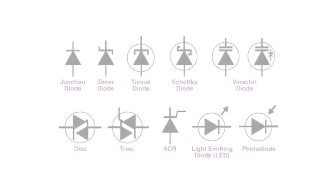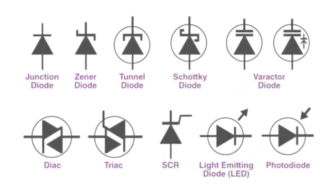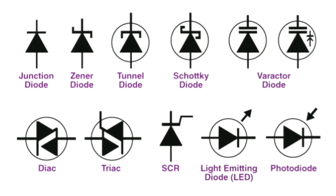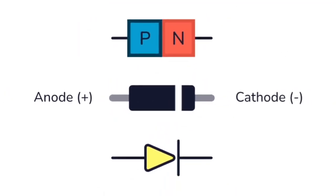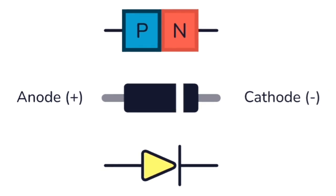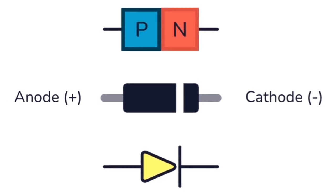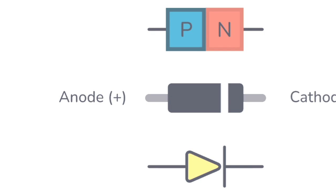Diodes are semiconductor devices that allow current to flow in one direction while blocking it in the opposite direction. This happens due to the way they are doped, creating a region with an excess of electrons (n-type) and another with a deficit of electrons, called holes (p-type).